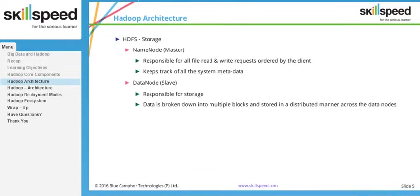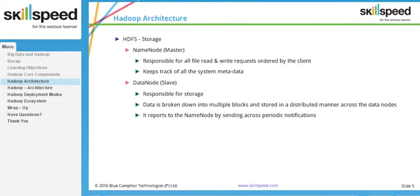Imagine you have 100 DataNodes in a cluster and you wish to store a file of 500 megabytes. The 500 megabyte file will not be stored as a single file; rather, it will be divided into multiple blocks. In Hadoop 2, by default, the block size is 128 megabytes. So a 512 megabyte file will be broken down into four chunks of 128 MB, and each block will be stored on a particular DataNode. The data is divided and spread across the cluster.